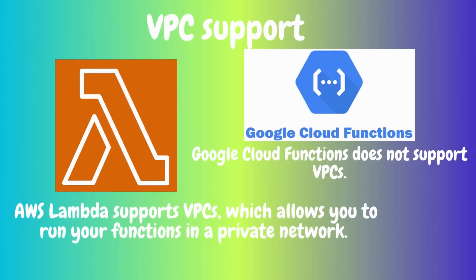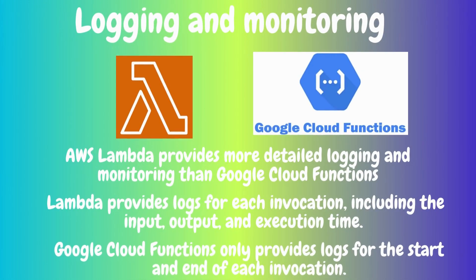VPC support: AWS Lambda supports VPC (Virtual Private Cloud), which allows you to run a function in a private network isolated from the public internet. Google Cloud Functions does not have VPC support. Running your Lambda functions in a VPC can help improve the security of your applications.